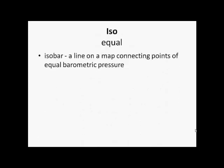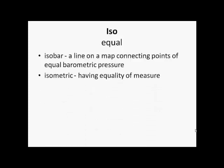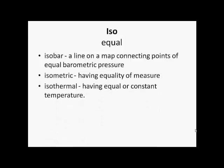'Iso' means equal. So isobar is a line on a map connecting points of equal barometric pressure. Isometric means having equality of measurement. And isothermal means having equal or constant temperature.